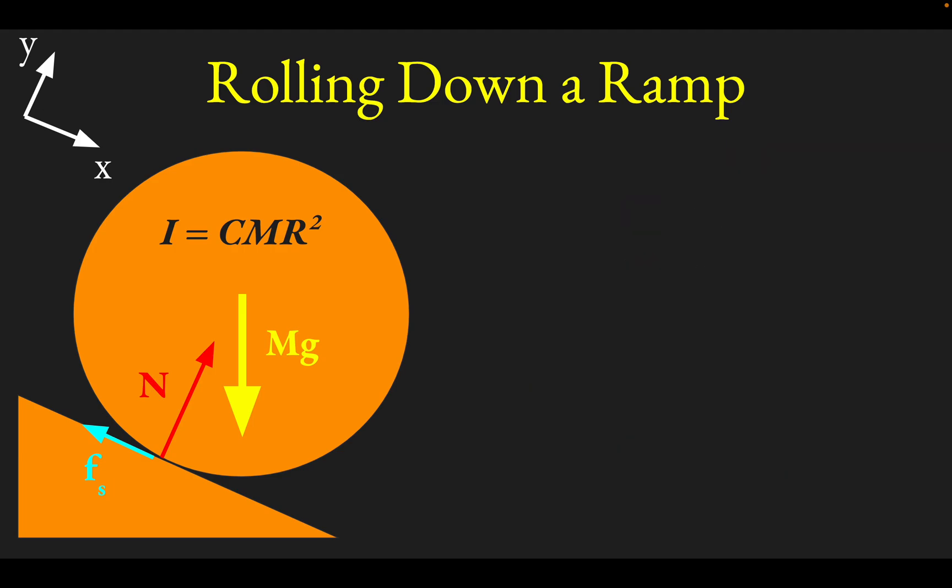So let's play around with this a bit and see what we get for different shapes. We have this general result of the acceleration being g sine theta over 1 plus a constant here that will determine what shape we're talking about. Well, if we're talking about a hoop, C equals 1.